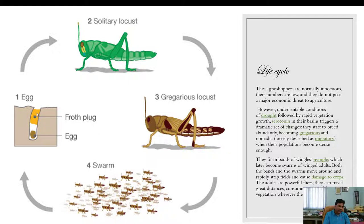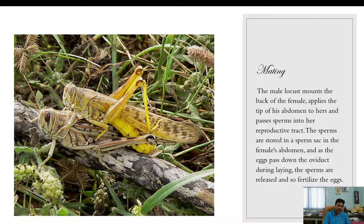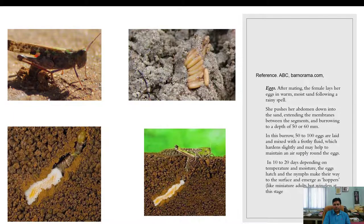Regarding mating: the male locust mounts the back of the female, applies the tip of his abdomen to hers, and passes sperm into the reproductive tract. The sperm are stored in the sperm sac in the female abdomen, and the eggs pass down for fertilization.